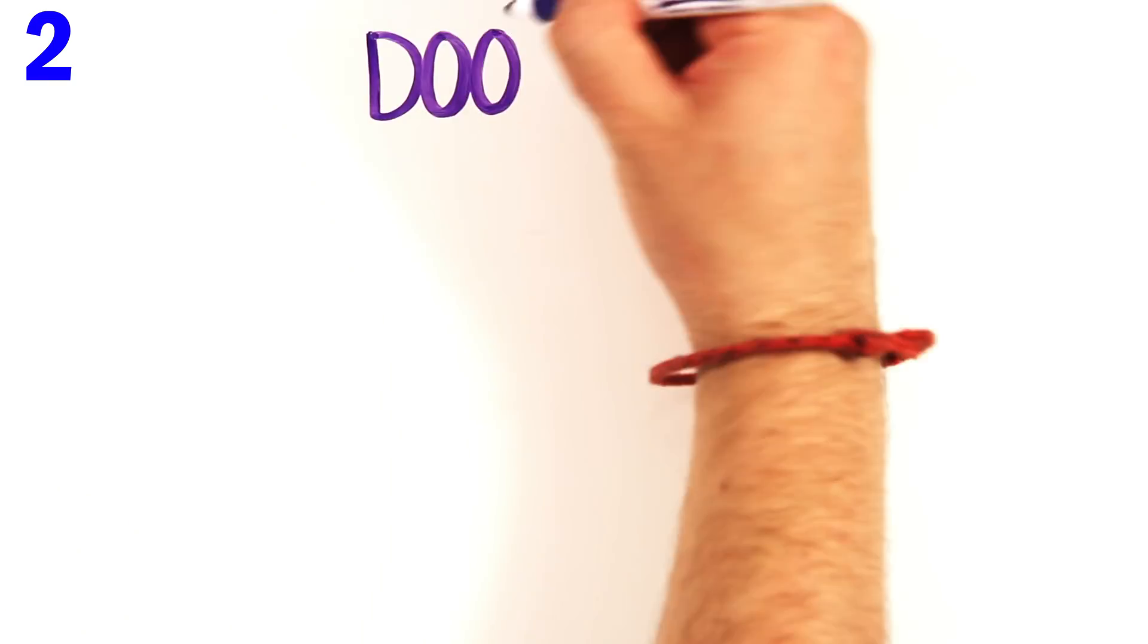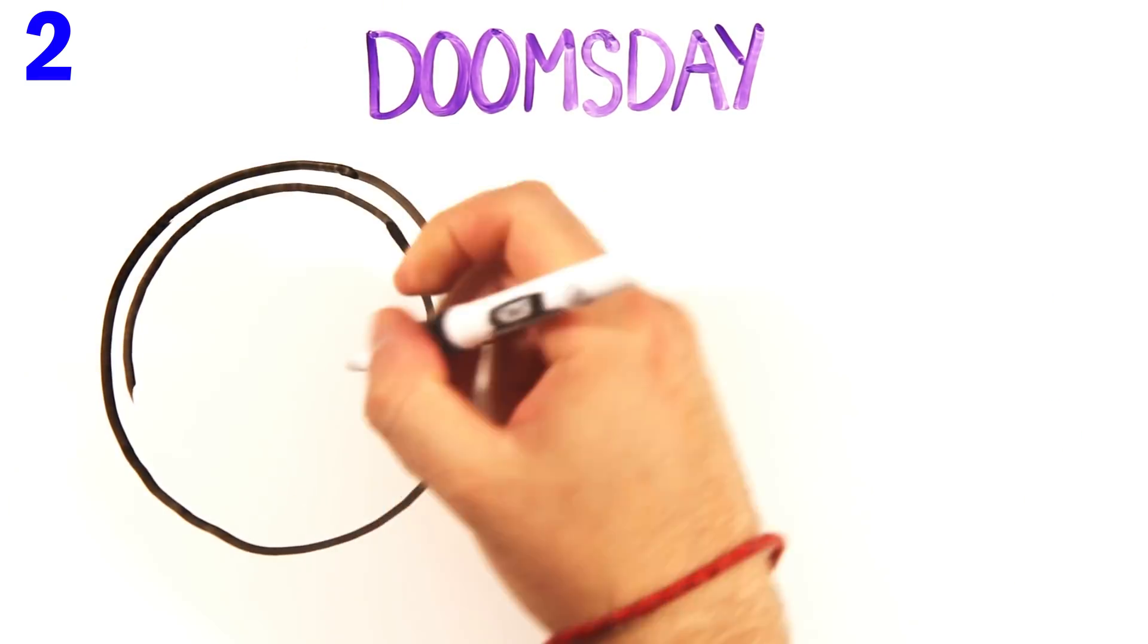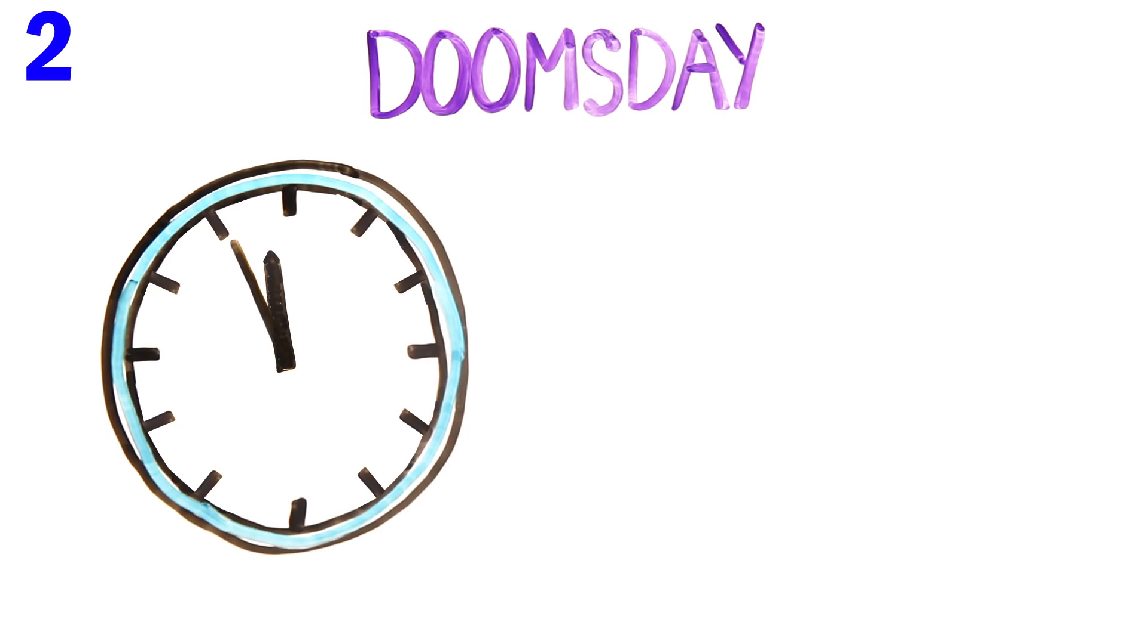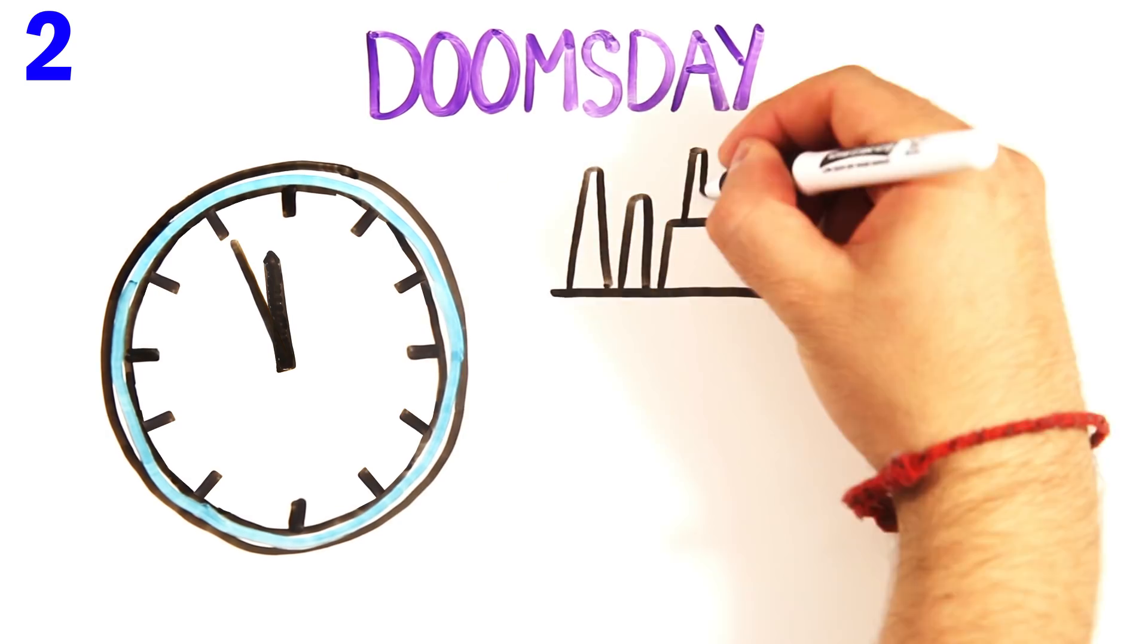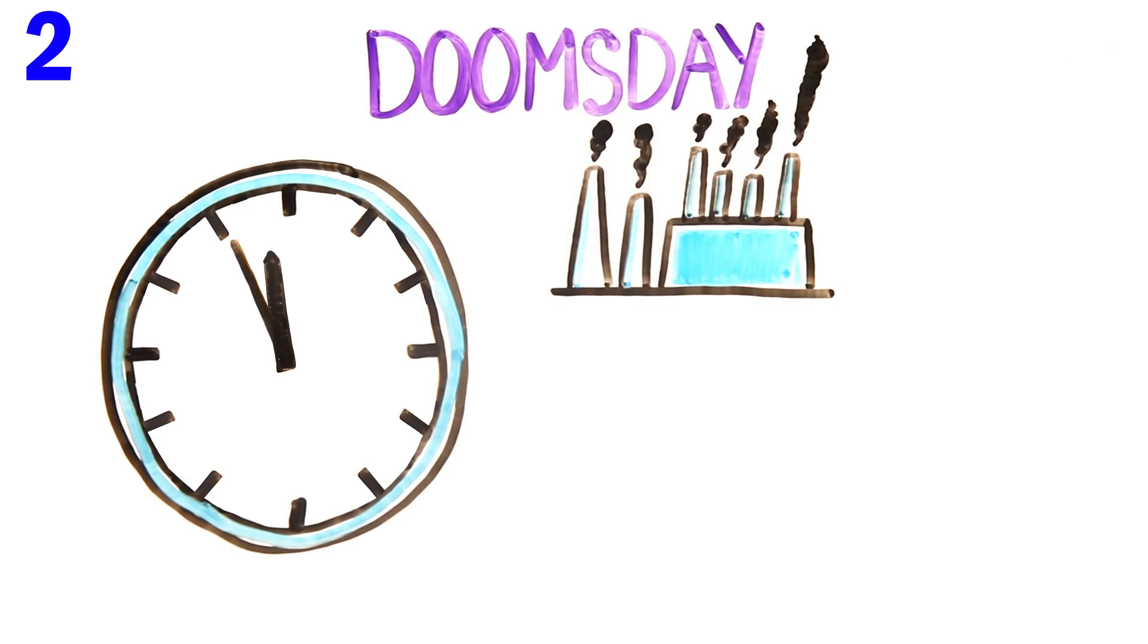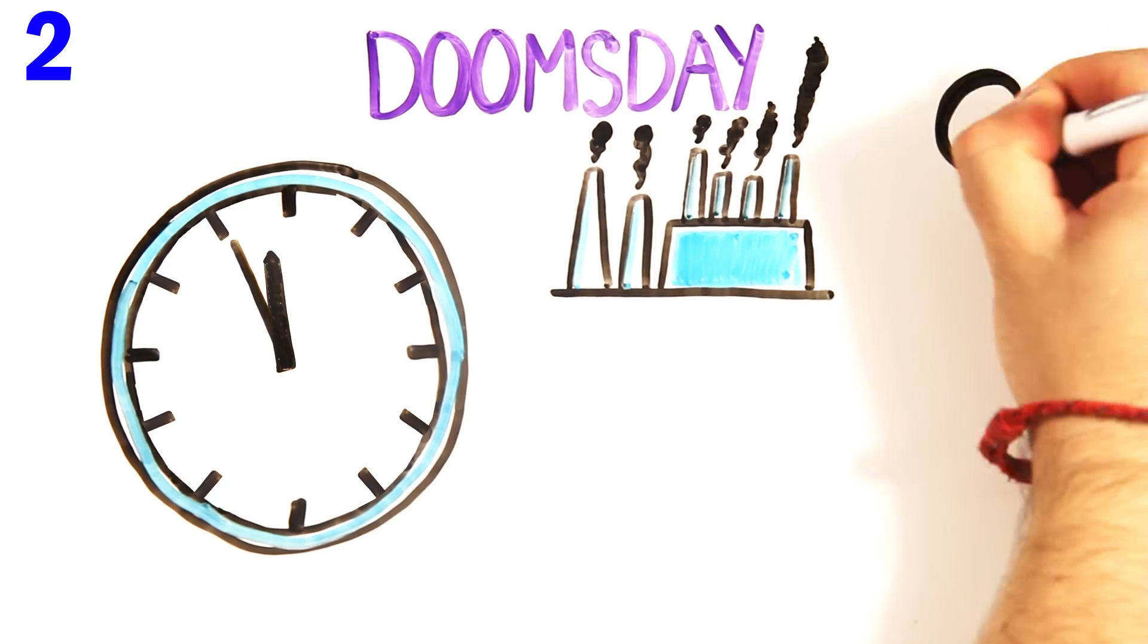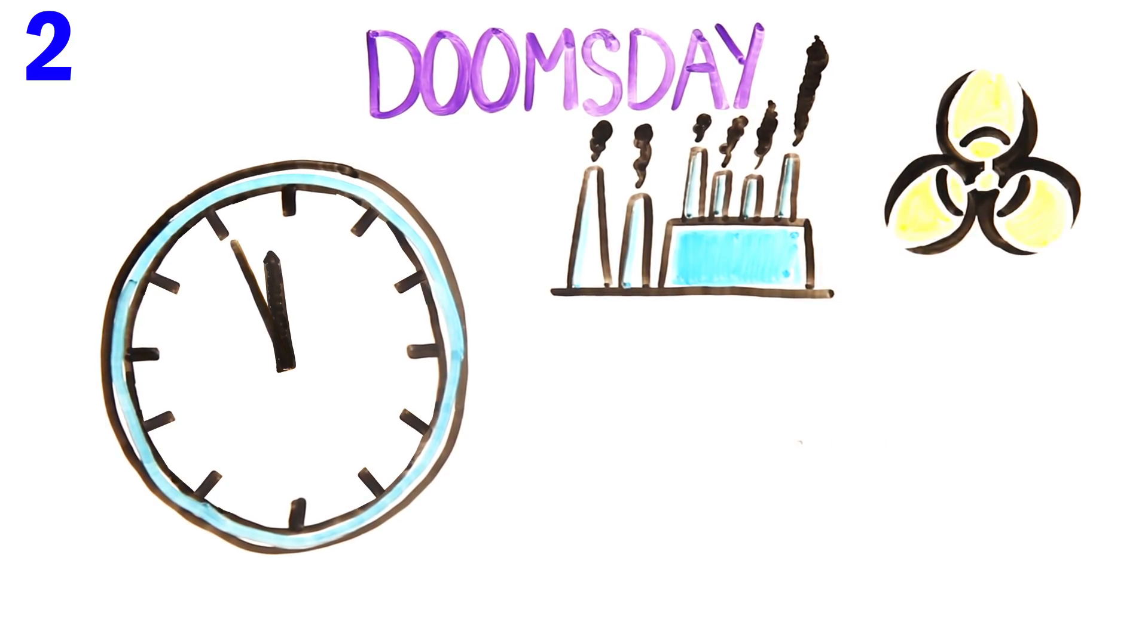The Doomsday Clock, created by the Bulletin of Atomic Scientists, represents the likeliness of a man-made global catastrophe. Though the clock more recently included climate change and some other developments that put humanity at risk, emphasis is placed on nuclear war. Since its creation in 1947, the furthest we've been from midnight, or doomsday, is in 1991, when the clock was 17 minutes to midnight. Today, in 2017, the clock sits at 2.5 minutes to midnight, the second closest it has ever been.